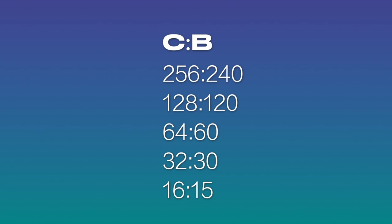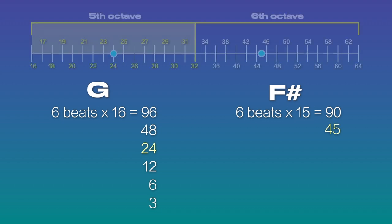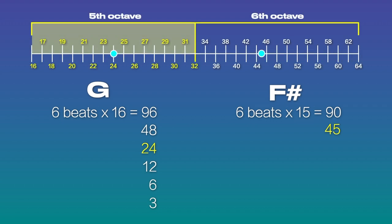Sauveur also knew that the interval between these two notes was a semitone with the ratio of 16 to 15. In the harmonic series, that's the ratio of C to B — middle C at 256 Hz to B at 240 — scaled down to the ratio of harmonic 16 to harmonic 15. He then multiplied the 16 from the ratio by the 6 beats to get a frequency value of 96 for G, and multiplied 15 by 6 beats to get a frequency value of 90 for F-sharp. Although 96 Hz is the harmonic value for G, 90 Hz is not the harmonic value of F-sharp, which is 88 Hz — so this F-sharp is not a note, it's a mean.